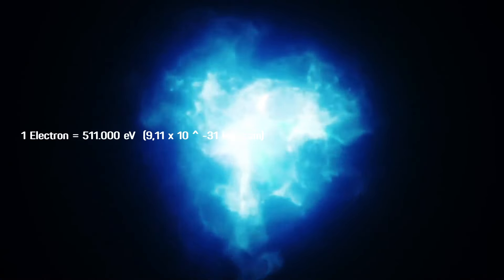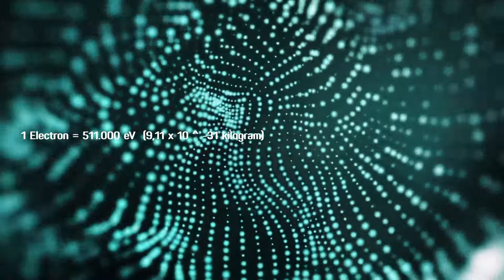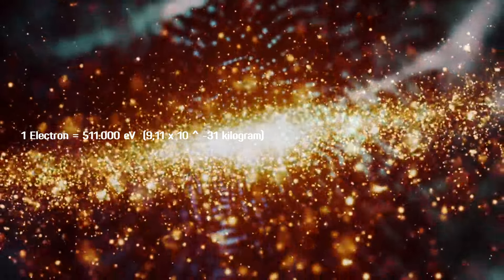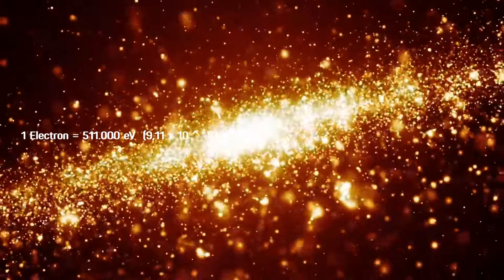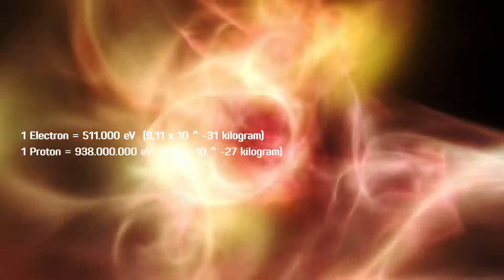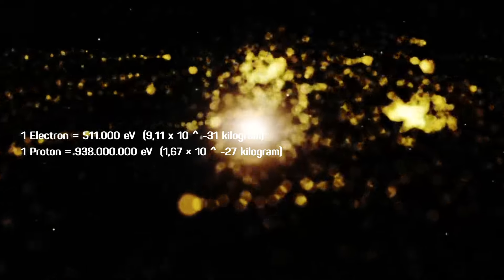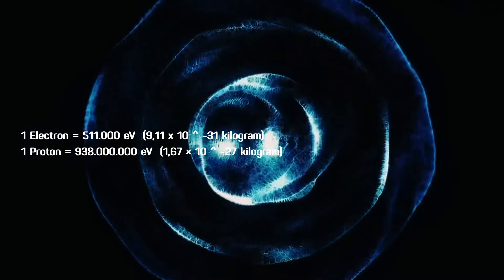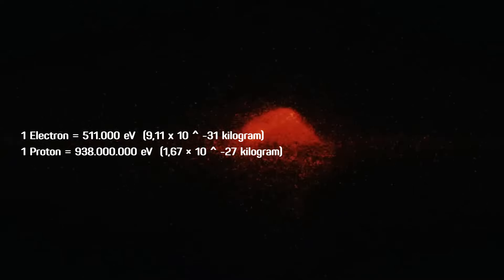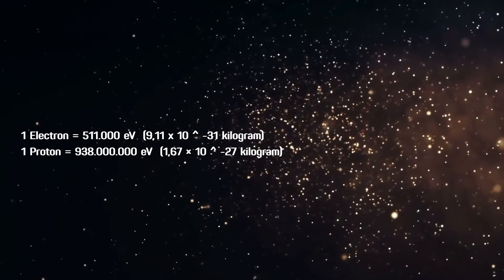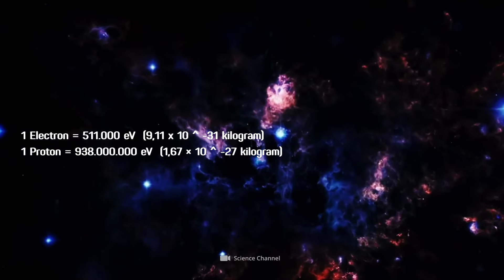An electron weighs 511,000 electron volts, equivalent to 9.11 times 10 to the power of negative 31 kilograms. For comparison, a typical proton in the nucleus of a typical atom weighs 938 million electron volts, or 1.67 times 10 to the power of negative 27 kilograms.